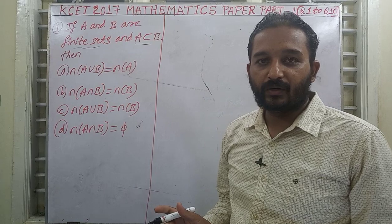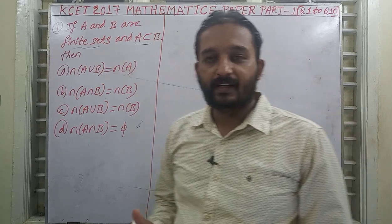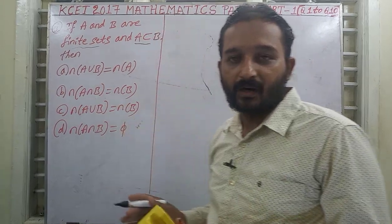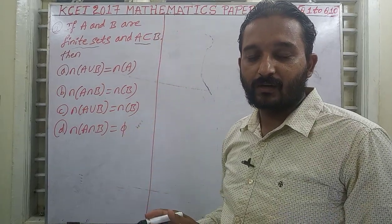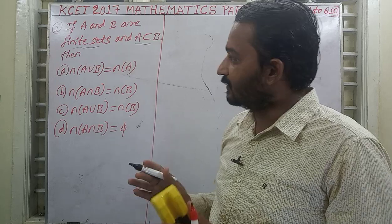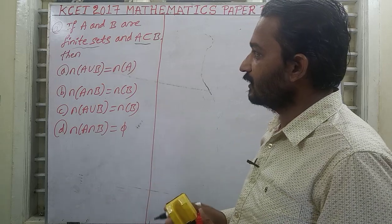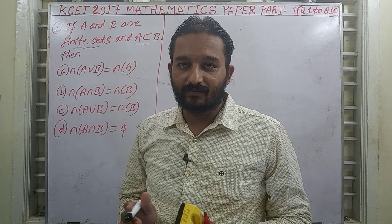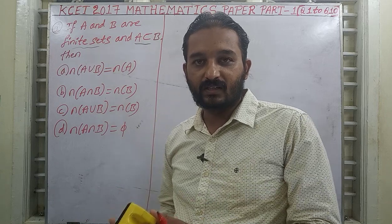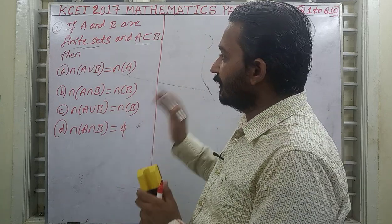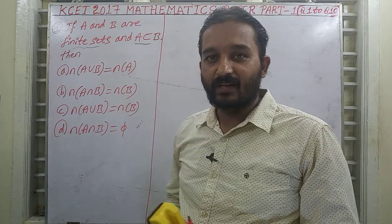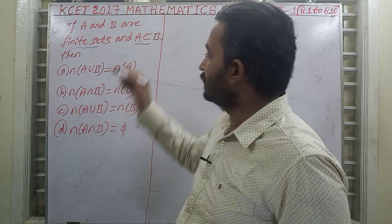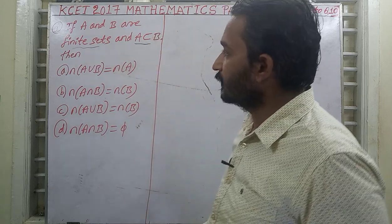In this video I am going to solve KCET 2017 Mathematics Paper Part 1, from question number 1 to 10. Let us move on to the first question. This question is based on the chapter Sets, from the first year, particularly on the number of elements present in a given set and subsets.